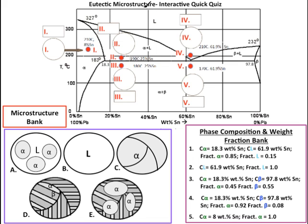Here's question 7, at the point 210 degrees Celsius and 61.9% Sn, which is at Roman numeral 4, or this red dot right here, what is the phase composition and weight fraction? Your answer would go in this box here, and your choices are 1, 2, 3, 4, and 5.